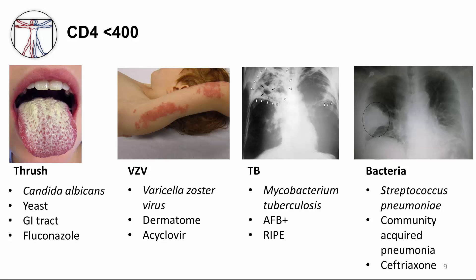Let's start with thrush, or oral candidiasis. It has a typical appearance on clinical exam with white plaques on the buccal mucosa, palate, tongue, or oropharynx. It is caused by a fungus — a yeast, Candida albicans typically. It usually lives on the skin and in the GI tract, and we treat with fluconazole.